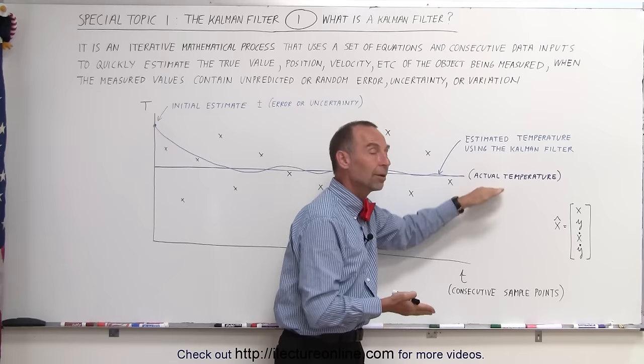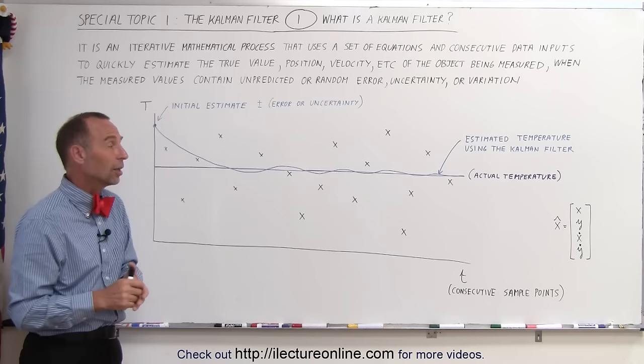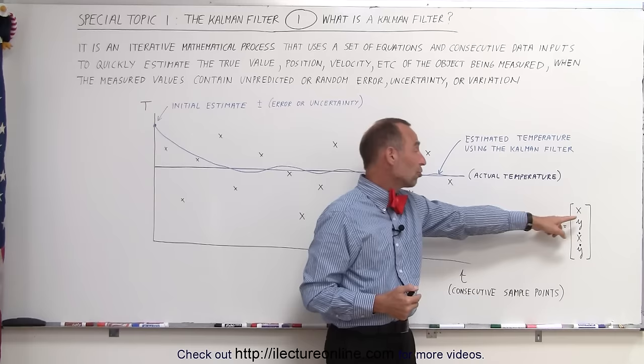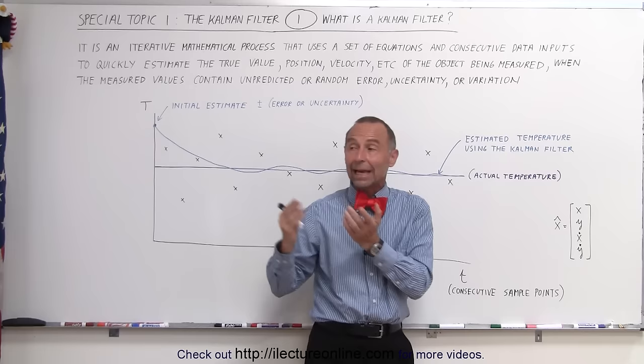Now in this example here there's only one measured value we're after, the temperature. However, this can be used especially like in radar technology or GPS tracking satellites. We need to know the target that we're tracking. We need to know its position in the x direction, the position in the y direction, the velocity in the x direction, the velocity in the y direction.